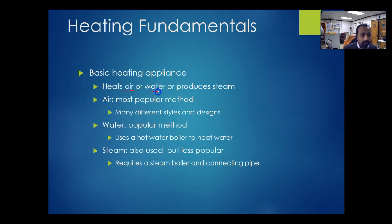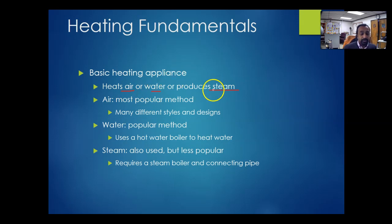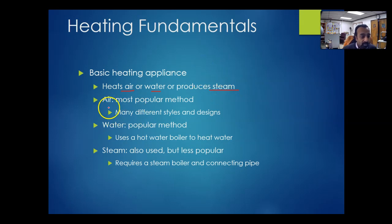For basic heating appliances, we either heat air, heat water, or produce steam. We can heat the air — that's a forced air system. We can heat water and use radiators, or we can produce steam that goes into radiators, dispenses heat, and becomes water — that's more of a latent heat process. Air systems are most popular for many regions because they can be coupled with air conditioning.